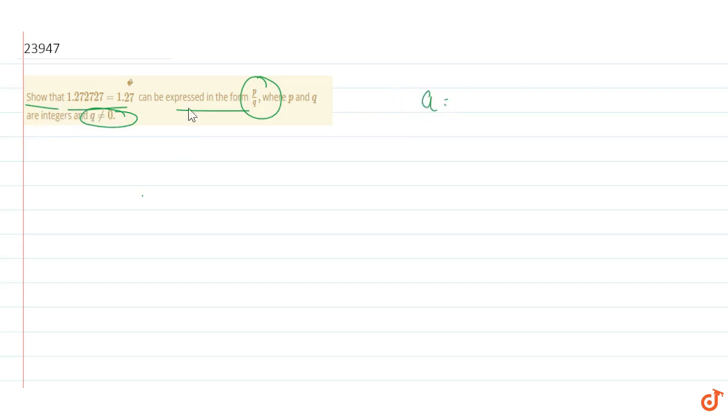So, let a be equal to 1.272727... Here we say that 27 is repeating — a bar over 27 — so 2 digits repeat.